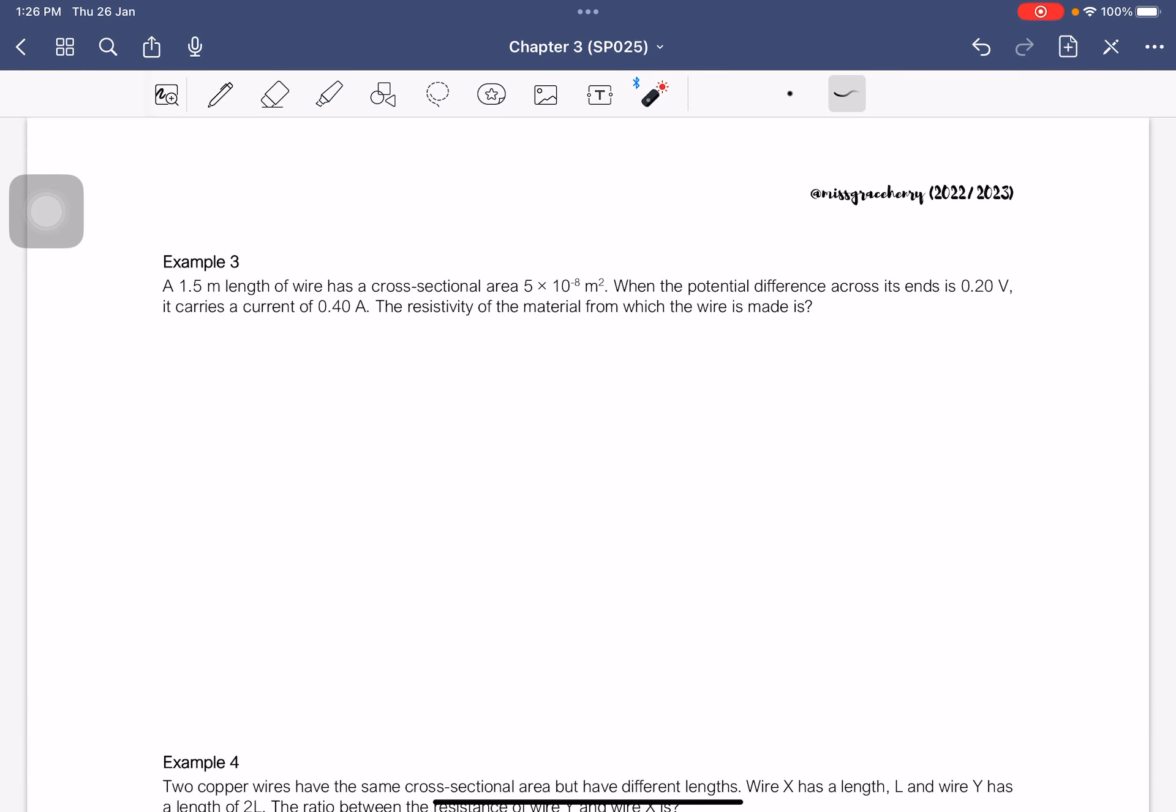So let's go on to example 3. A 1.5 meter length of wire has a cross-sectional area of 5 times 10 to the negative 8 meter square. When the potential difference across its ends is 0.2 volt, it carries a current of 0.4 ampere. The resistivity of the material from which the wire is made is. We have to use the equation of resistivity, rho equals RA over L. And since we do not have the value of resistance, but we know that the formula for resistance is V over I, we can then substitute this V over I into this equation.